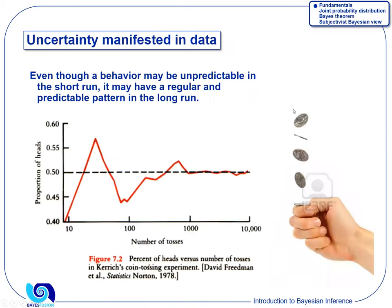An important thing to realize about probabilities is that it's sometimes very hard to predict something in the short run. For example, if I ask you to predict the outcome of a coin toss, the accuracy of your predictions will be around 50-50. But statistics and probability make statements about the long run. Even though it's very hard to predict the outcome of a single coin toss, you can be guaranteed that when the number of tosses goes to infinity, you will see very strong regularities. If you make many predictions using probability, in the long run you'll be better off than when you are not using probability.